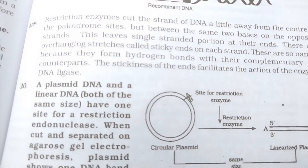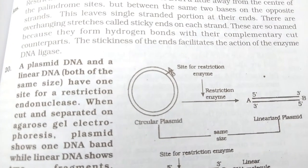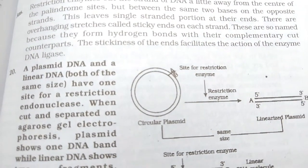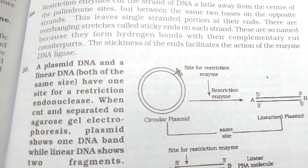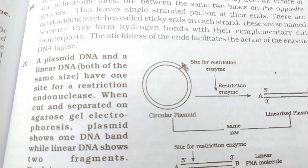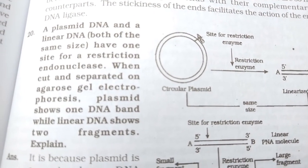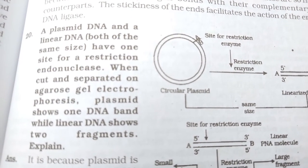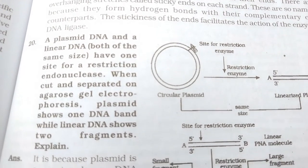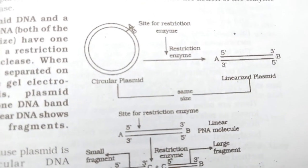A plasmid and a linear DNA, both of the same size with one site for restriction endonuclease, are cut and separated on agarose gel electrophoresis. The plasmid shows one DNA band while the linear DNA shows two fragments. Explain this — the answer is shown.